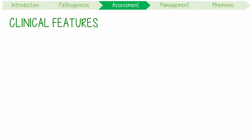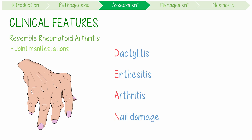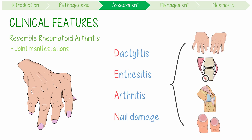Its clinical features can resemble rheumatoid arthritis, especially when you just consider its peripheral joint manifestations. However, the unique combination of all of the DEAN features is really indicative of psoriatic arthritis.